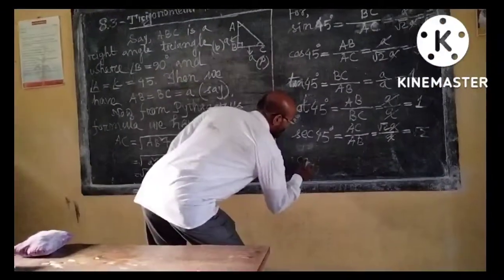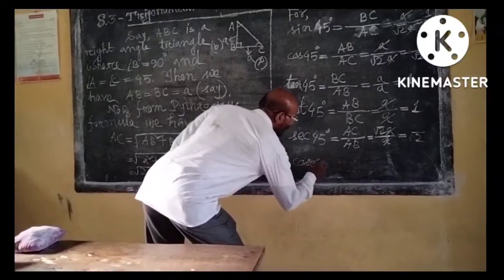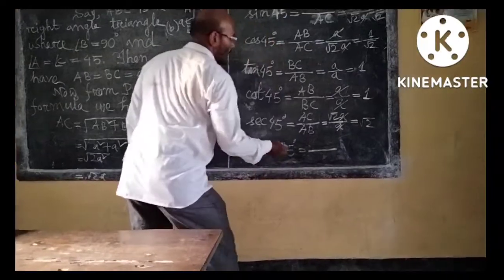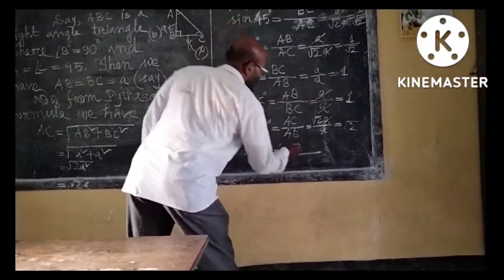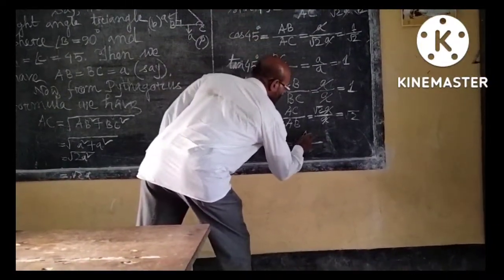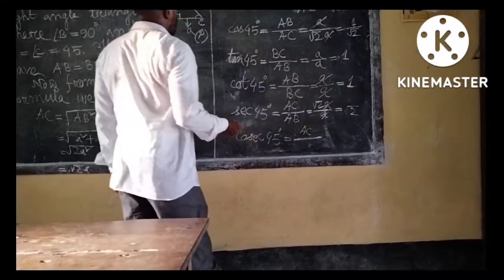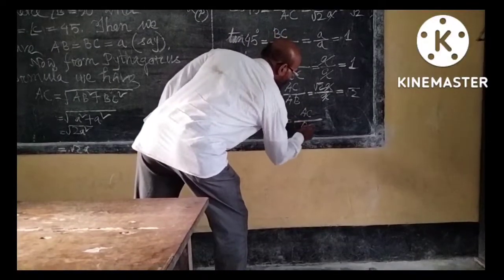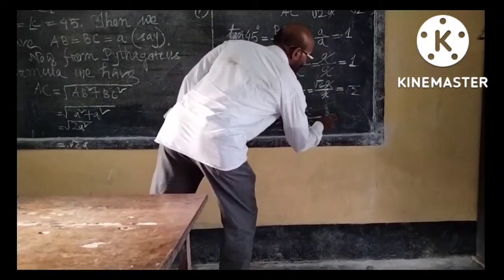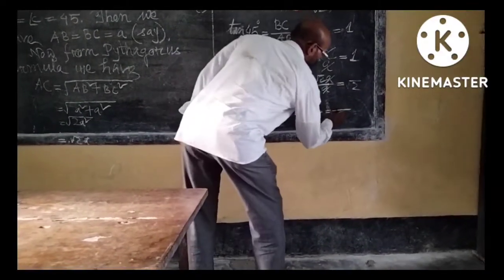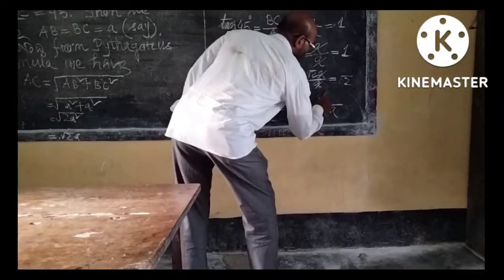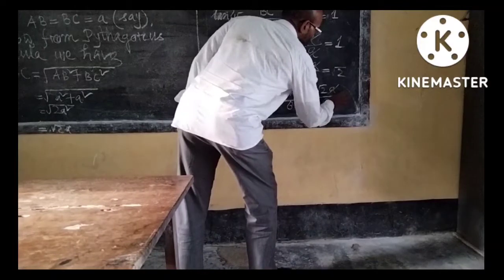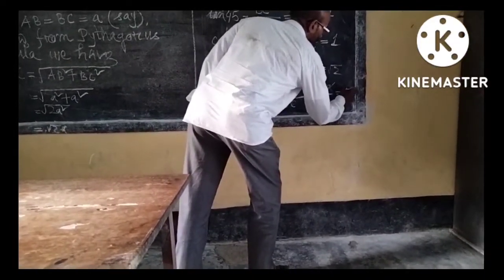And lastly, cosec 45 degrees equals hypotenuse by perpendicular, which is AC by BC. BC is A and AC is root 2 A. After cancelling A, we have root 2.